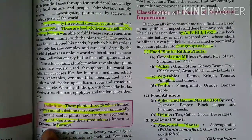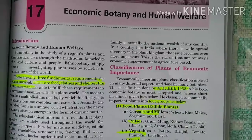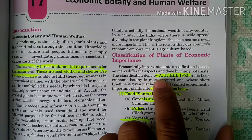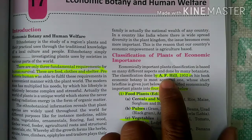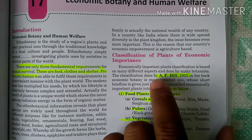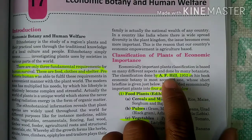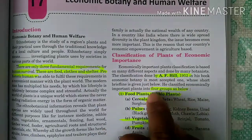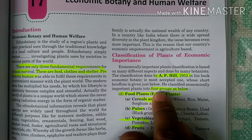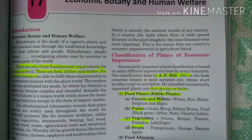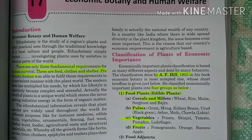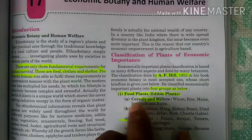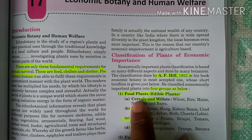The main classification of economic plants was given by scientist AF Hill. AF Hill classified economic plants into four groups: first, food plants; second, food adjuncts; third, medicinal plants; and fourth, industrial plants.